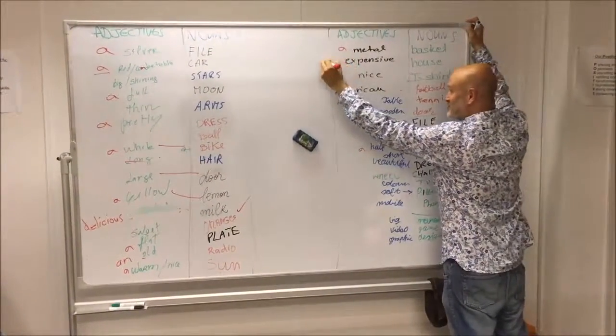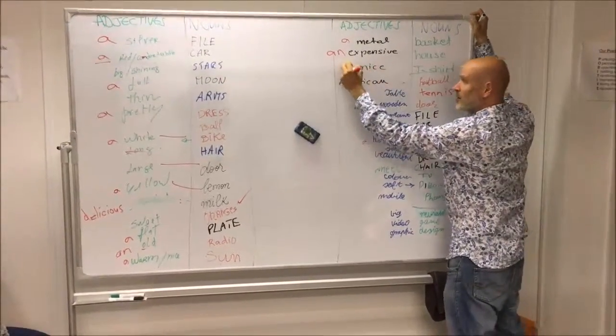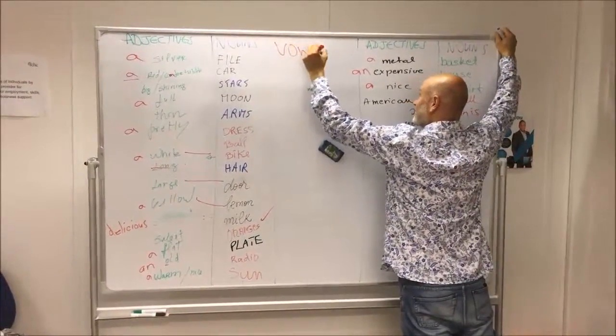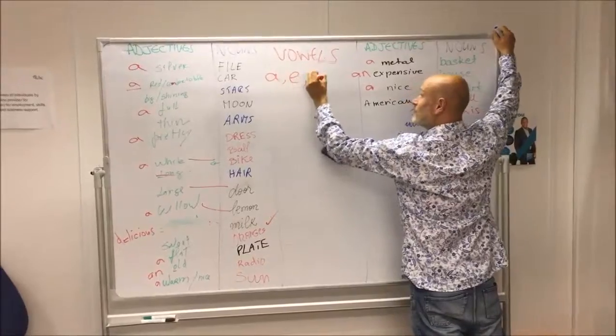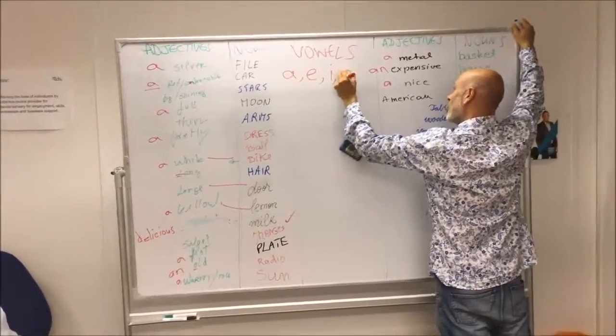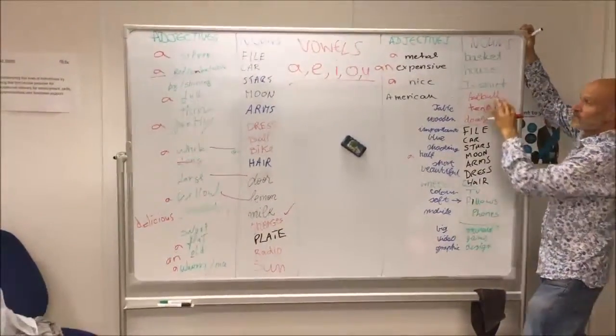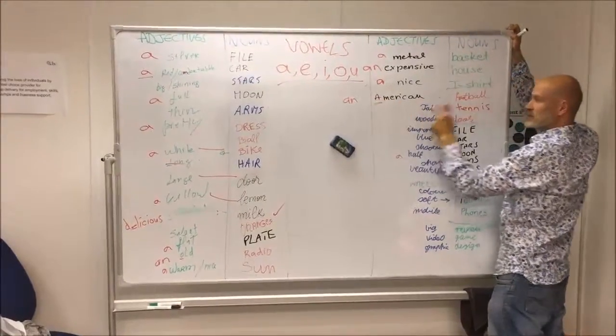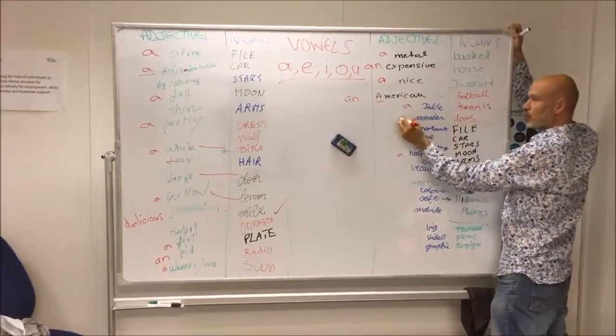A warm sun, a nice sun. So we have a metal basket. What about this one? An expensive house. What about this one? Because vowels, yes, that's it. Vowels are only A, E, I, O, U. Well done everybody!